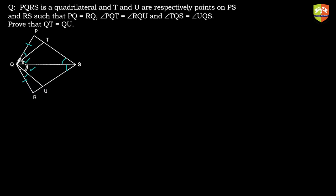One angle pair is already given equal and there's a common side, but we still need to prove that angle TSQ equals angle USQ. For that, these angles must be part of two different congruent triangles. Angle S is part of triangle PQS, and the other angle S is part of triangle RQS. So if we prove that the two bigger triangles PQS and RQS are congruent, then these two angles will automatically be equal by CPCT.